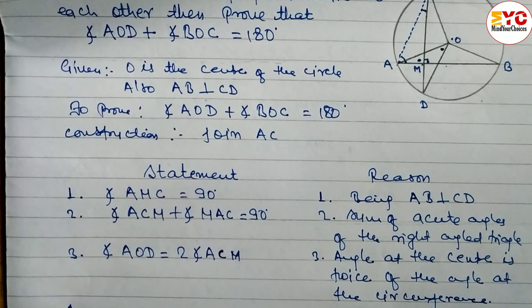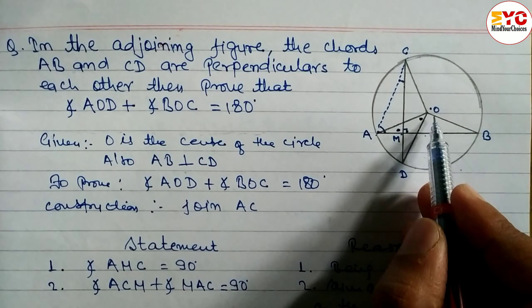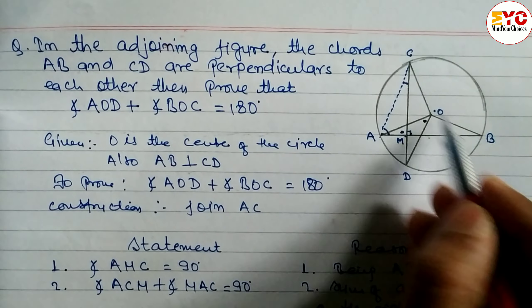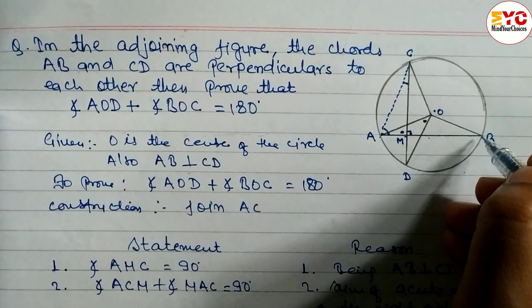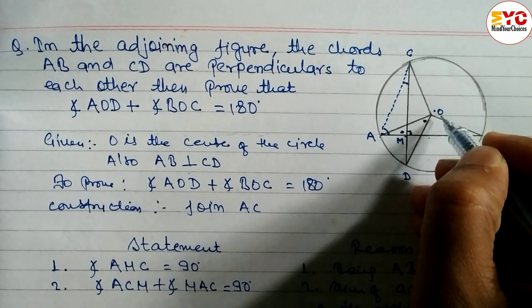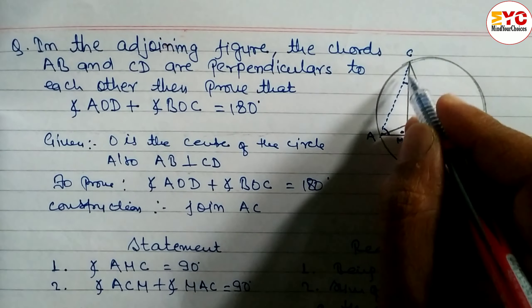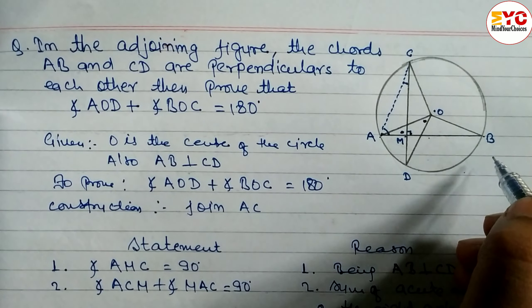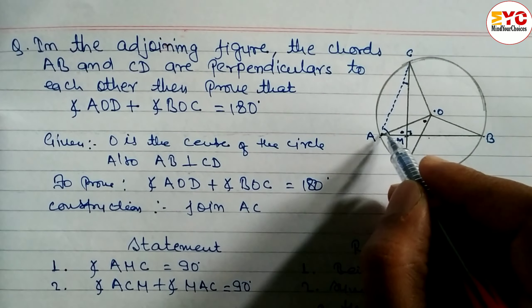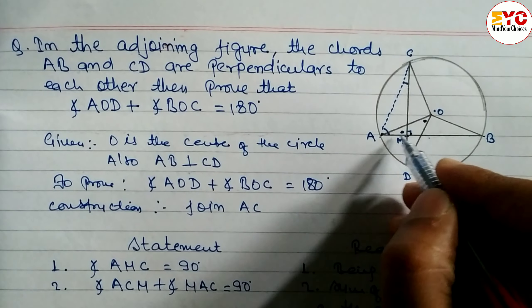Statement 4: Similarly, angle BOC is the central angle. For this central angle, the inscribed angle is angle BAC — we can take BAC or MAC, both refer to the same angle. So we write: angle BOC = 2 × angle MAC.